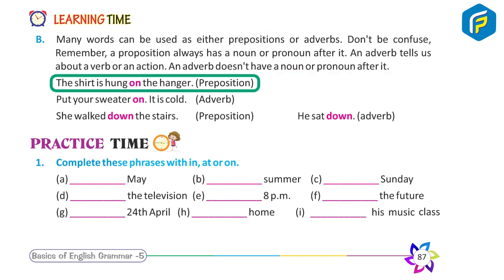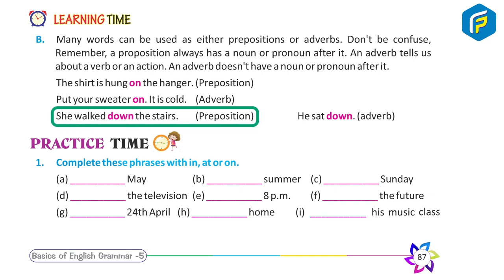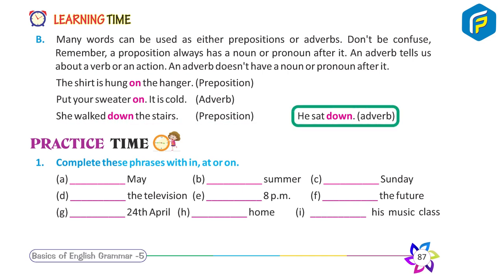Examples: 'The shirt is hung on the hanger.' — Preposition. 'Put your sweater on. It is cold.' — Adverb. 'She walked down the stairs.' — Preposition. 'He sat down.' — Adverb.